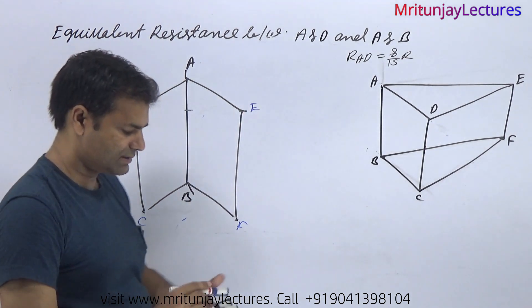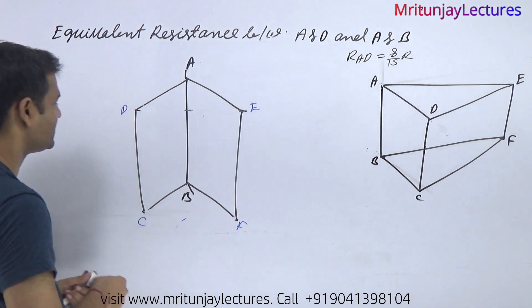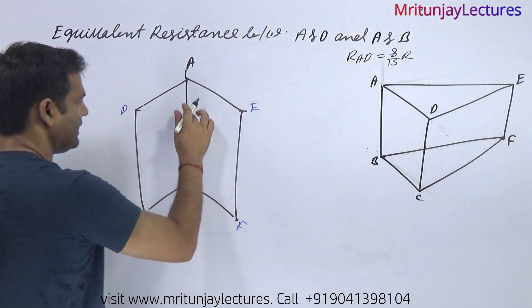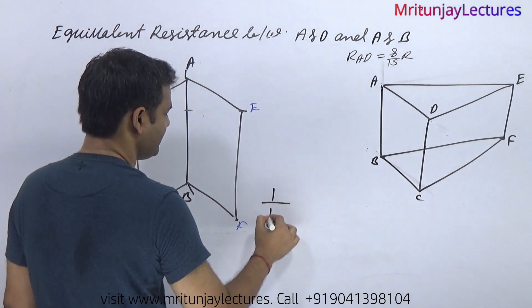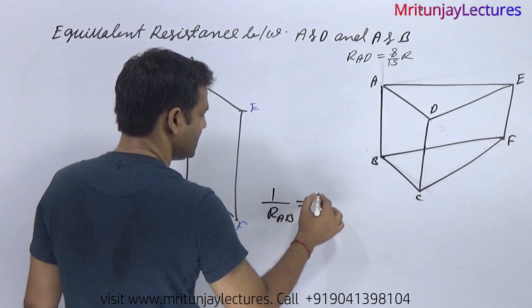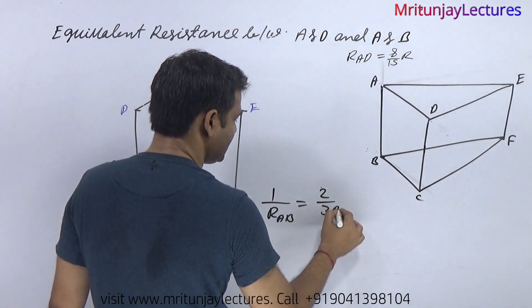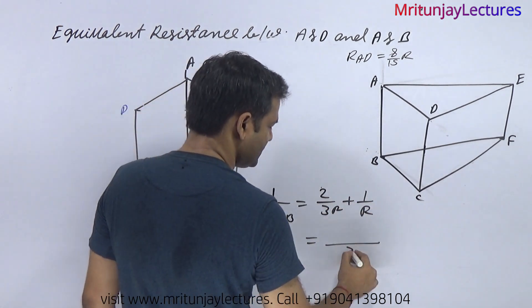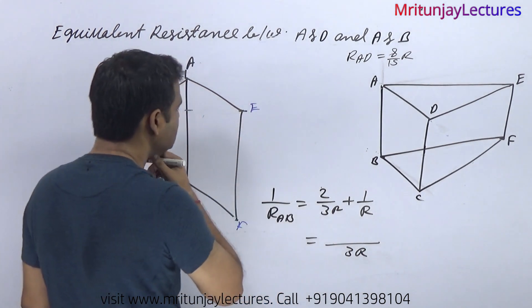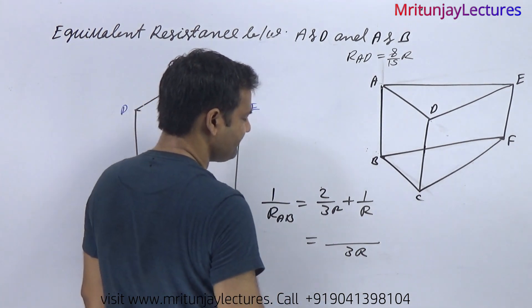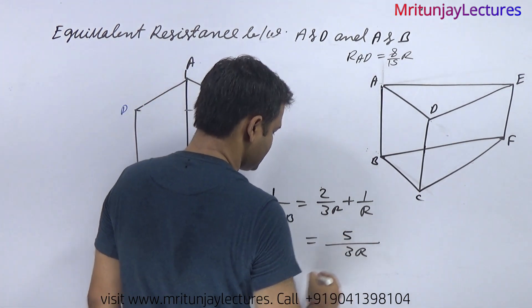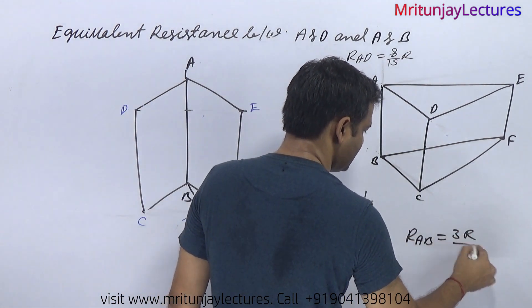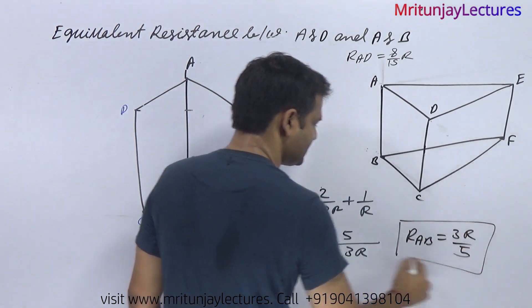So this resistance and this resistance are removed. After removing these resistances, we get R, R, R, 3R, and also 3R, and R. So R_AB equals 2 divided by 3R plus 1/R, giving 3R divided by 5. Finally, R_AB equals 3R/5, which is the final answer.